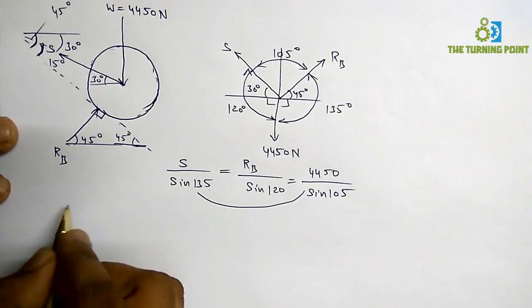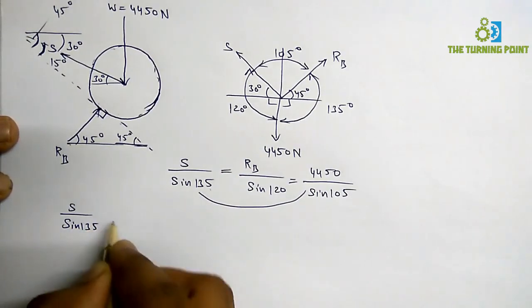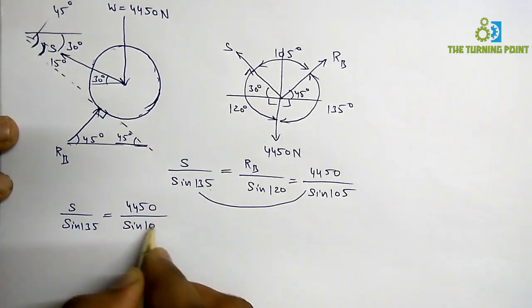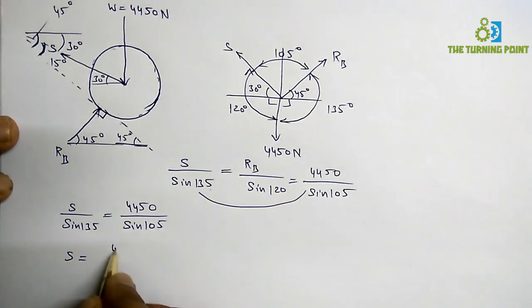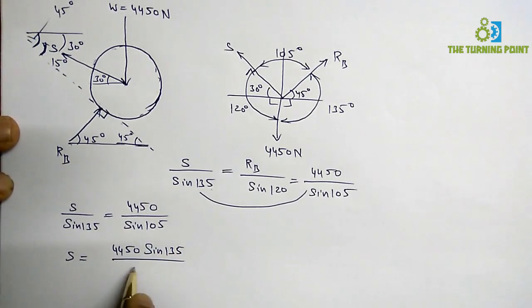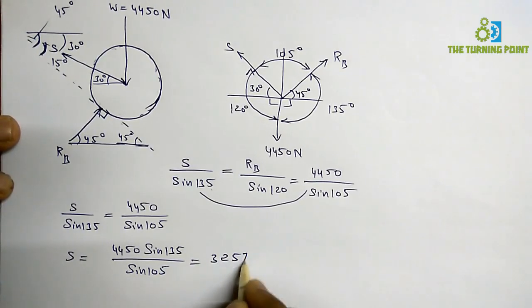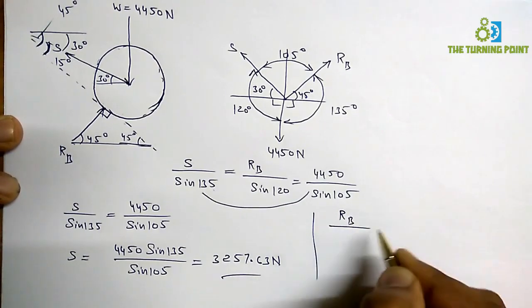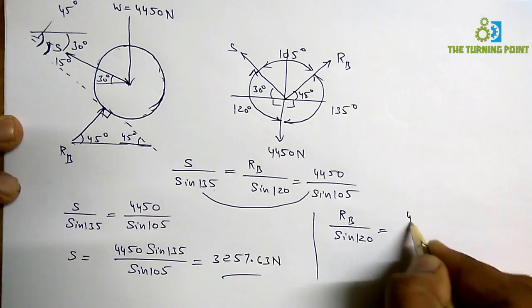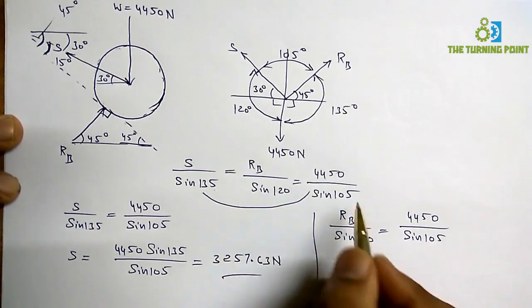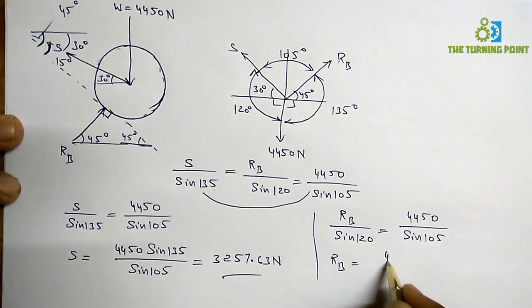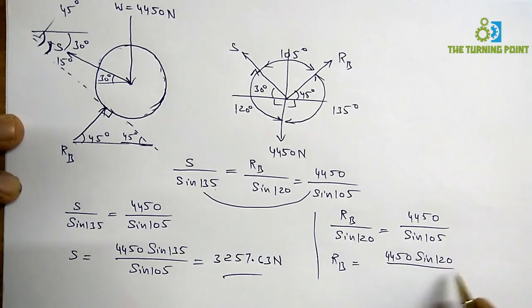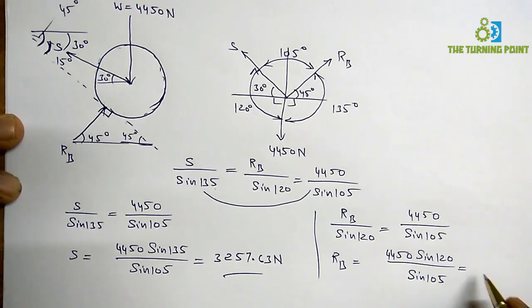To find S: S divided by sine 135 equals 4450 divided by sine 105. So S equals 4450 times sine 135 divided by sine 105, which gives S approximately equal to 3257.636 Newtons. To find RB: RB divided by sine 120 equals 4450 divided by sine 105. So RB equals 4450 times sine 120 divided by sine 105, which gives RB approximately equal to 3989.76 Newtons.